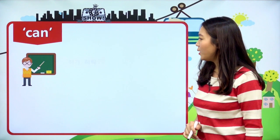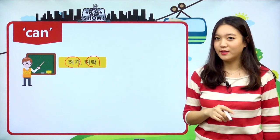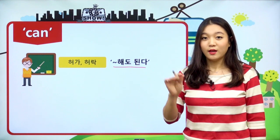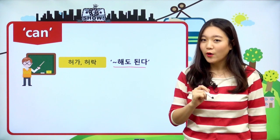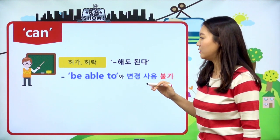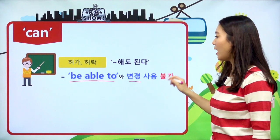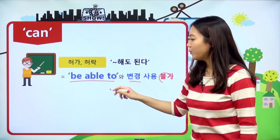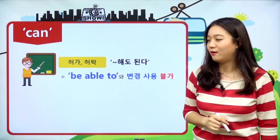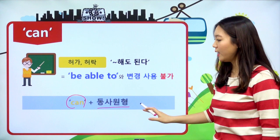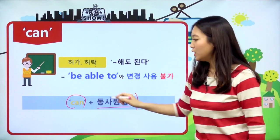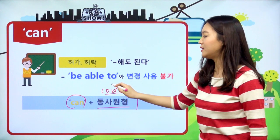두 번째는 허가나 허락의 can이에요. 해석은 '뭐뭐 해도 된다'라고 해석이 되고요. 조금 전에 살펴봤던 예문 중에 Can I go to the bathroom?이라고 하는 문장이 있었죠. 그것이 바로 허락이나 허가를 나타내는 can이에요. 이 허가나 허락의 can 같은 경우에는 be able to와 변경해서 사용할 수가 없어요. be able to는 '뭐뭐 할 수 있다'라는 뜻이기 때문에 허가나 허락의 can과는 같이 사용할 수 없는 거예요. 또한 허가나 허락은 지금 허락하는 것이기 때문에 과거형인 could로도 잘 사용되지 않아요.